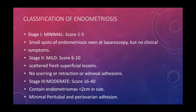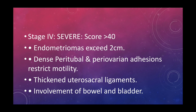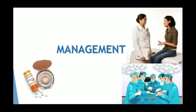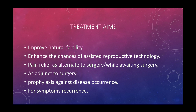Classification of endometriosis: Stage I is minimal disease with a score of 1 to 5 — small spots of endometriosis seen at laparoscopy but no clinical symptoms. Stage II is mild with a score of 6 to 10 — scattered superficial lesions with no scarring or adnexal adhesions. Stage III is moderate disease with a score of 16 to 40 — endometriomas less than two centimetres and minimal peritubal and periovarian adhesions. Stage IV is severe disease with a score of more than 40 — endometrioma exceeding two centimetres, dense peritubal and periovarian adhesions restricting mobility, thickened uterosacral ligaments, and involvement of the bowel and bladder.